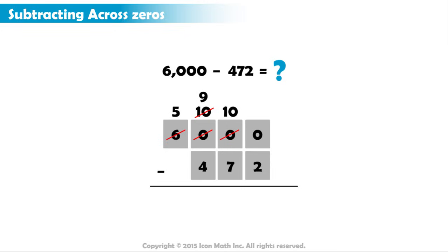Now, we can subtract. 10 minus 2 equals 8. 9 minus 7 equals 2. 9 minus 4 equals 5. And finally, we bring down the 5.